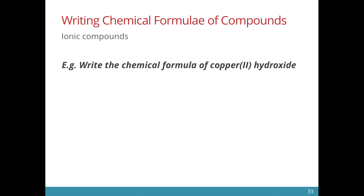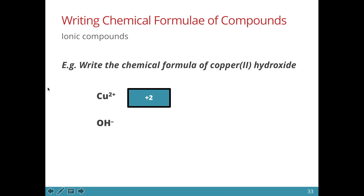In copper 2 hydroxide, there is the copper 2+ ion and the hydroxide ion. Notice that in some chemical names, you see Roman numerals 1, 2, or 3 and so on. This number tells us the charge of the metal ion. So the number 2 here tells us that the charge on copper is 2+. The hydroxide ion has a negative 1 charge, and we will need two of them to balance out the plus 2 charge of copper.